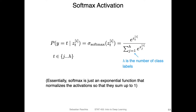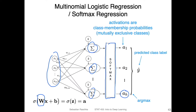Here's an overview of how the softmax activation function looks like. It's fundamentally not very complicated — it's essentially a normalization function. You can think of it as a generalization of the logistic sigmoid function for making the probabilities sum up to one. So let's say we have a class label t, and the possible class labels are one to h. With a softmax activation, we can compute the probability that a given output belongs to class t. We have h net inputs here: z one, z two, up to z h.